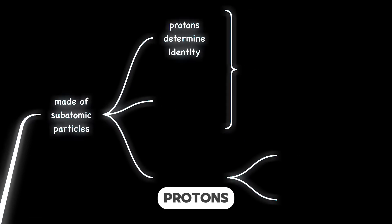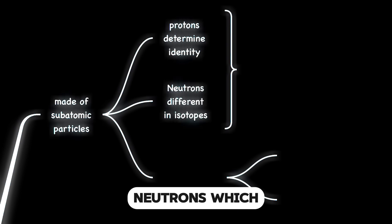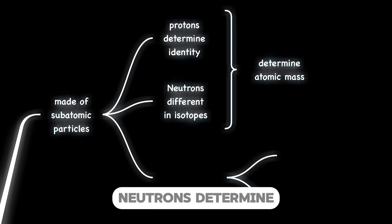First are protons, which determine the position of the element in the periodic table. Second is neutrons, which vary among different isotopes. Note that protons and neutrons determine the atomic mass. Electrons determine the chemical properties of the atom.